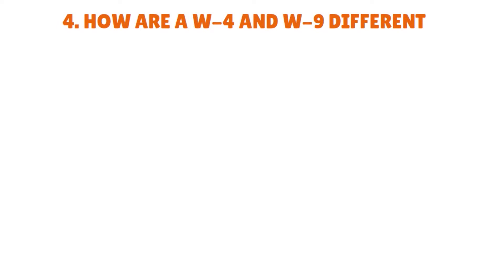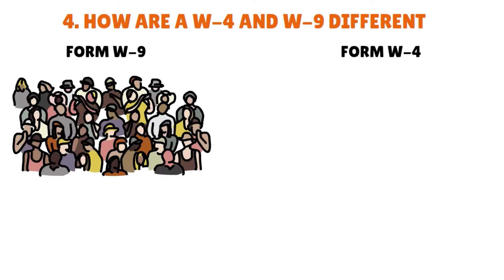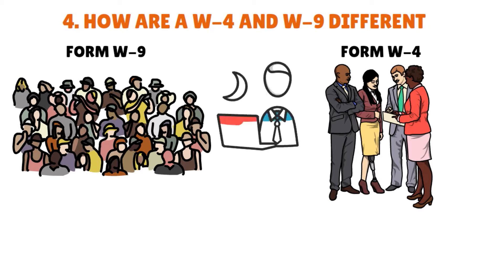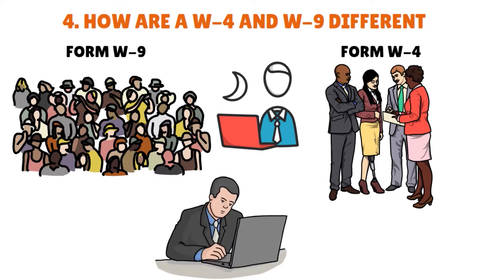How is Form W-4 distinct from Form W-9? Form W-9 for non-employees is comparable to Form W-4 — the employee's withholding certificate. You fill out a W-4 when you start a new job as a full-time employee or your financial situation changes. A W-4 form requires some of the same information as a W-9 — your name, address, and Social Security number — and also requests information on tax exemptions. Employers use the completed W-4 to determine how much to withhold from your paycheck. Since an employer doesn't withhold income taxes for contractors, W-9 forms don't request that info.